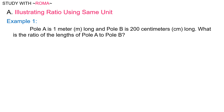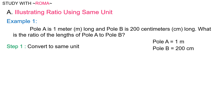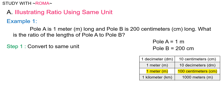Let's start with the given. Pole A is equal to 1 meter and Pole B is equal to 200 centimeters. There are different units in this example, so we cannot write the ratio as 1 is to 200 — that is wrong. So to solve this, Step 1: convert to the same unit using the conversion table. Find meter to centimeter. We have 1 meter is equal to 100 centimeters. So Pole A is now 100 centimeters.